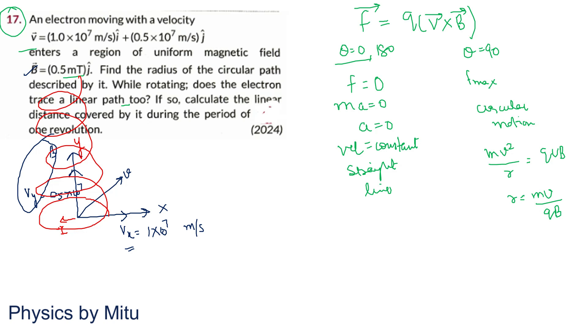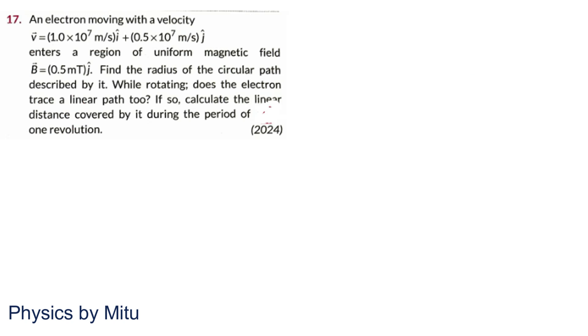Now how do we find the radius? We know the formula for radius. Here is the formula. But which component of velocity will you take? You will take the perpendicular component. The one that causes circular motion. You take V perpendicular. R is MV upon QB. V is V perpendicular, which causes circular motion.